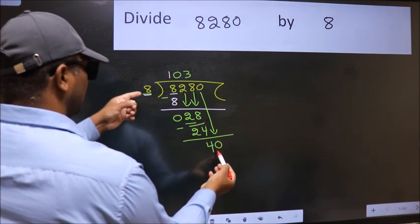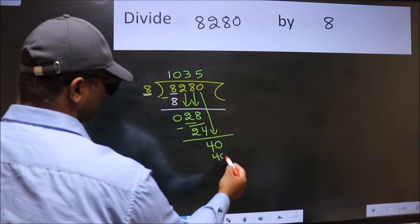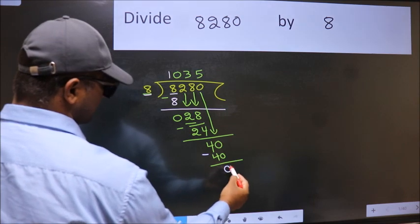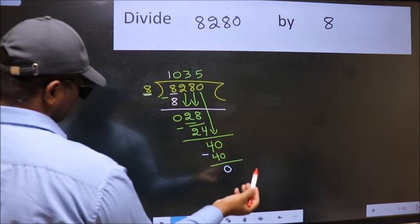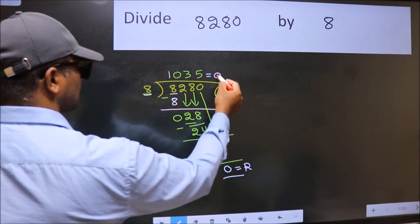When do we get 40 in the 8 table? 8 fives, 40. Now we subtract. We get 0. No more numbers to bring down. So we stop here. This is our remainder, and this is our quotient.